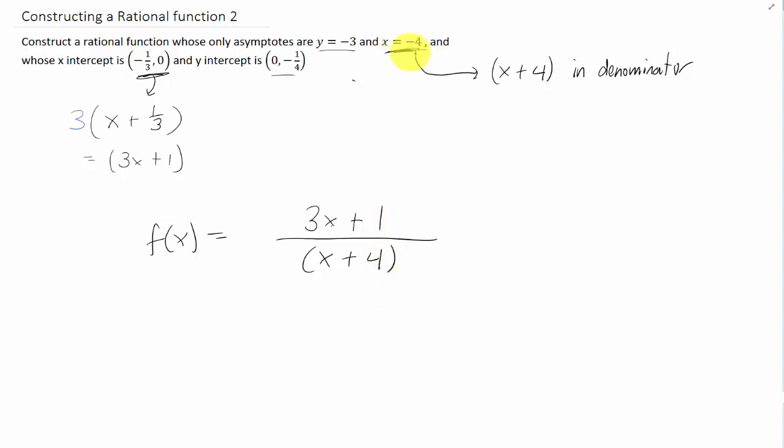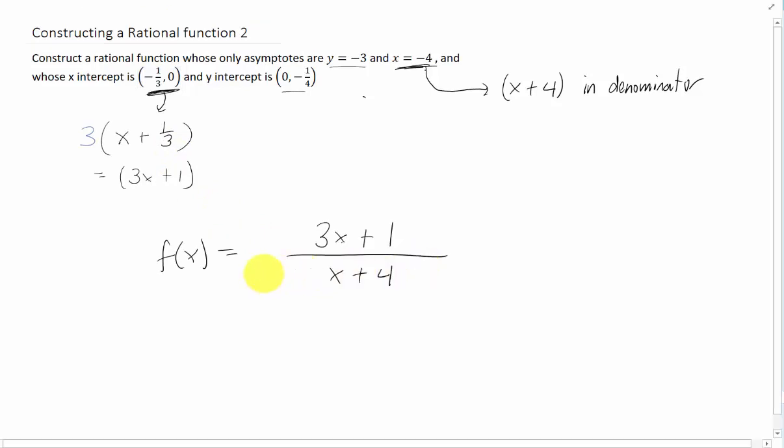Okay cool so our vertical asymptote gave us a factor in the denominator. Our 0 or our x intercept gave us a factor in the numerator. I'm going to delete these parentheses here. Now what else can actually be changed with this function while still keeping the vertical asymptote that we want and the 0 that we want? All we really have left that we're allowed to change with this function is to just multiply it by some constant.